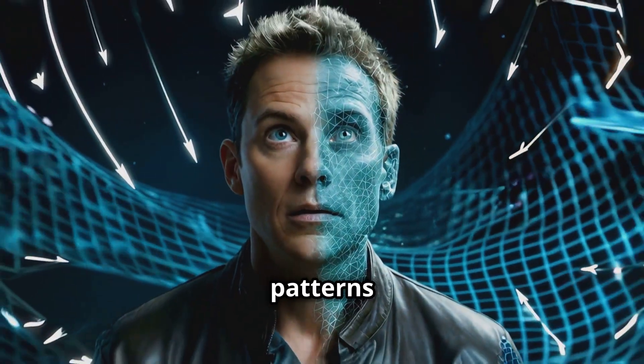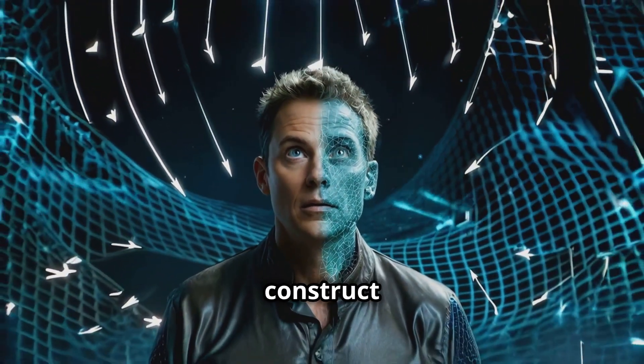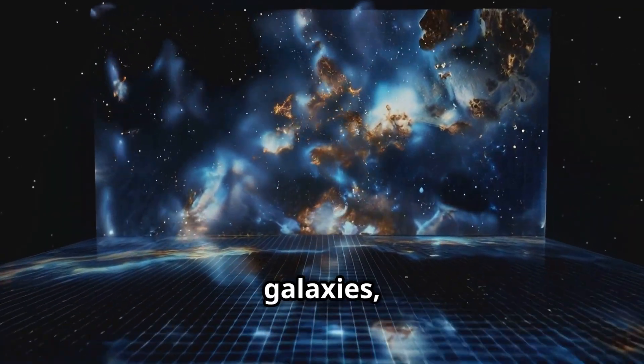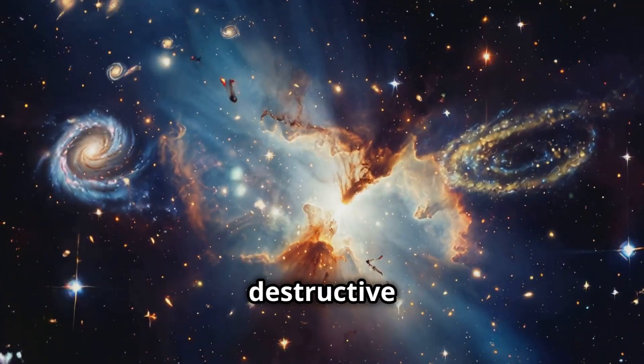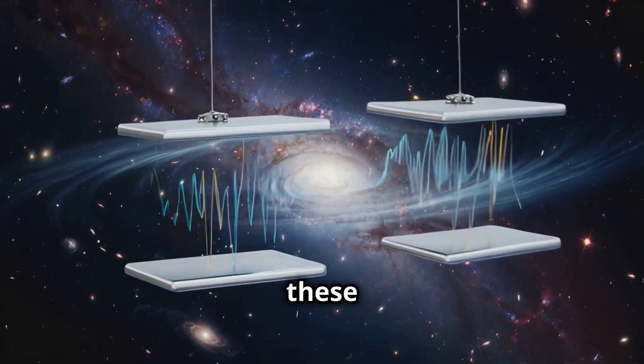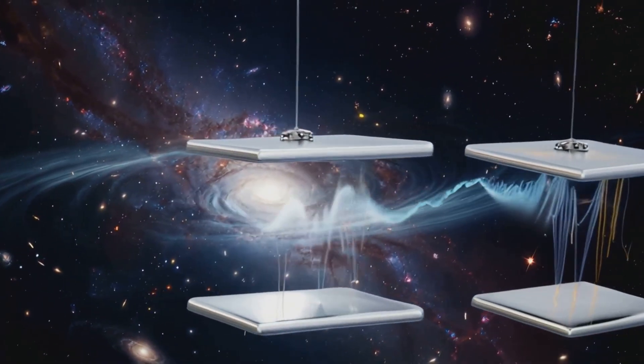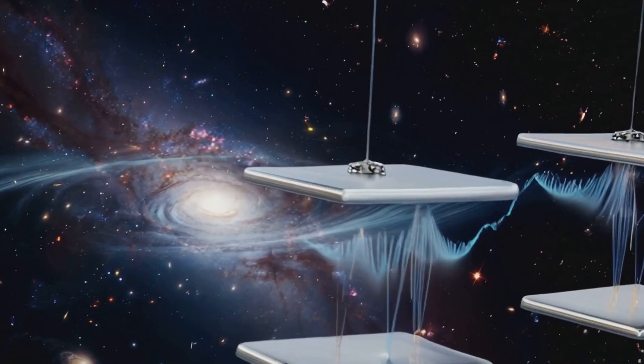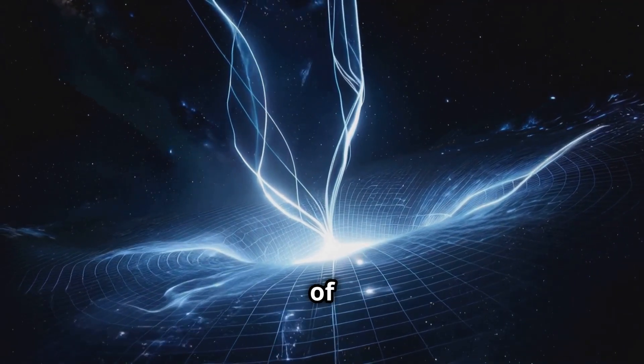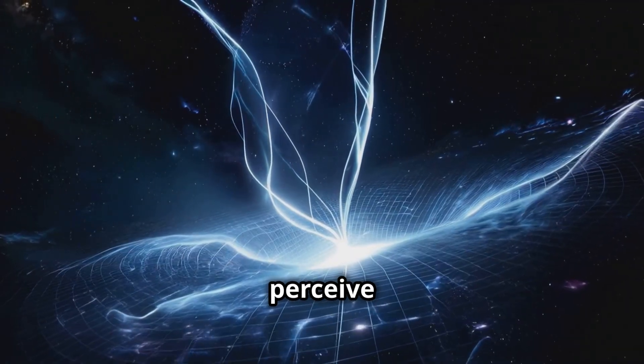The interference patterns on the holographic screen construct space and time themselves. Constructive interference creates galaxies, stars and life, while destructive interference carves out the voids between them. The shapes of these patterns encode everything: the velocities of particles, the probabilities of their existence, and even the curvature of space-time, which we perceive as gravity.